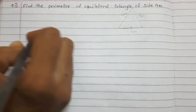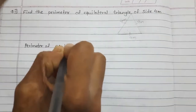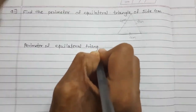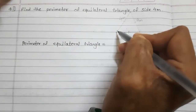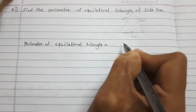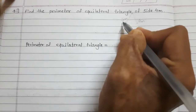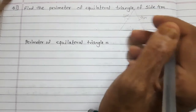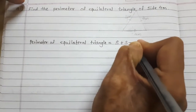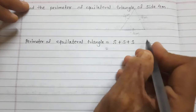Now let's find the perimeter of the equilateral triangle. Perimeter of equilateral triangle equals the sum of all its sides. The formula we can write is S plus S plus S, or if we consider one side as A, then it is A plus A plus A since all sides are equal. One side is given as 4 meter.